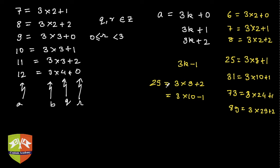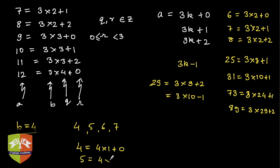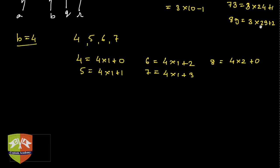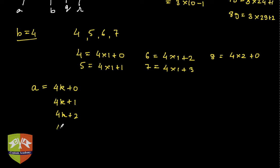Now what about b equal to 4? Taking examples: 4 is 4 into 1 plus 0, 5 is 4 into 1 plus 1, 6 is 4 into 1 plus 2, 7 is 4 into 1 plus 3, and 8 is 4 into 2 plus 0 — repetition starts. So 0, 1, 2, 3 are the possible remainders when an integer is divided by 4. Any number a can be expressed as 4k plus 0, or 4k plus 1, or 4k plus 2, or 4k plus 3.